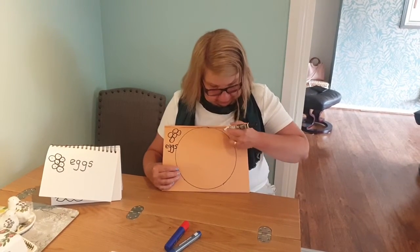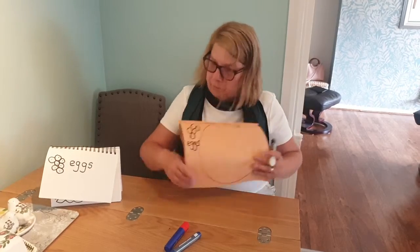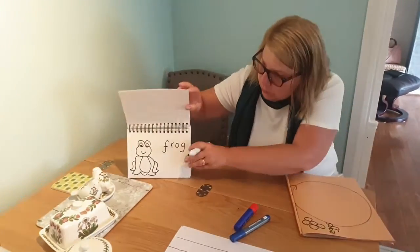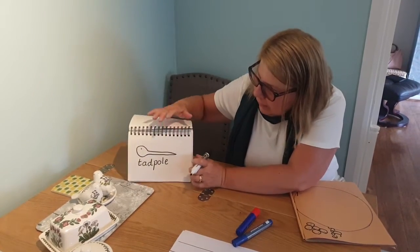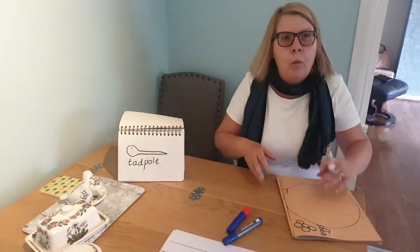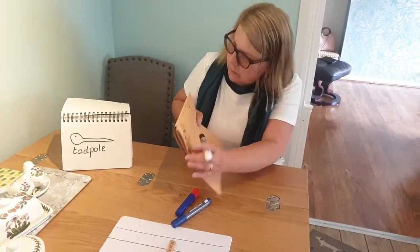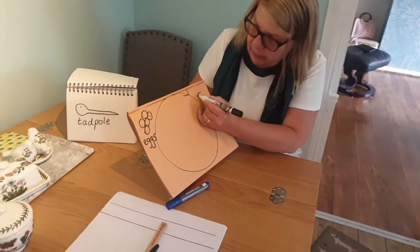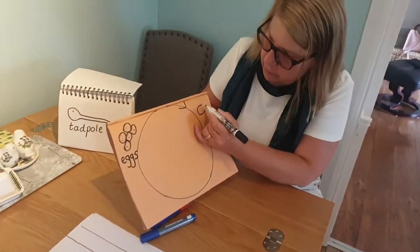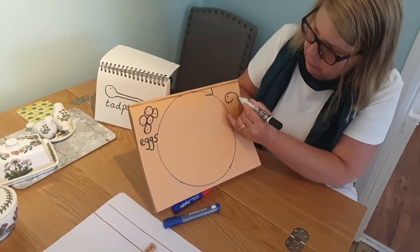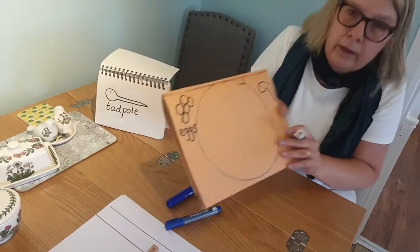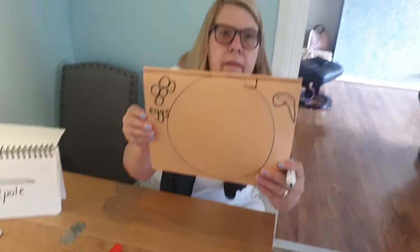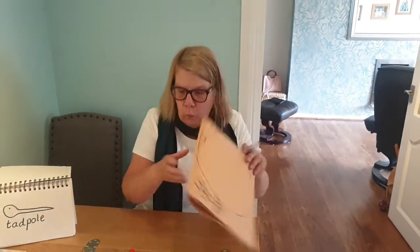Moving on to the next stage, following the arrow going this way. The next stage of the life cycle is a tadpole. He's got a little curved head, a little dot for an eye, and he comes down and he's got a little tail like that. And that's a tadpole.